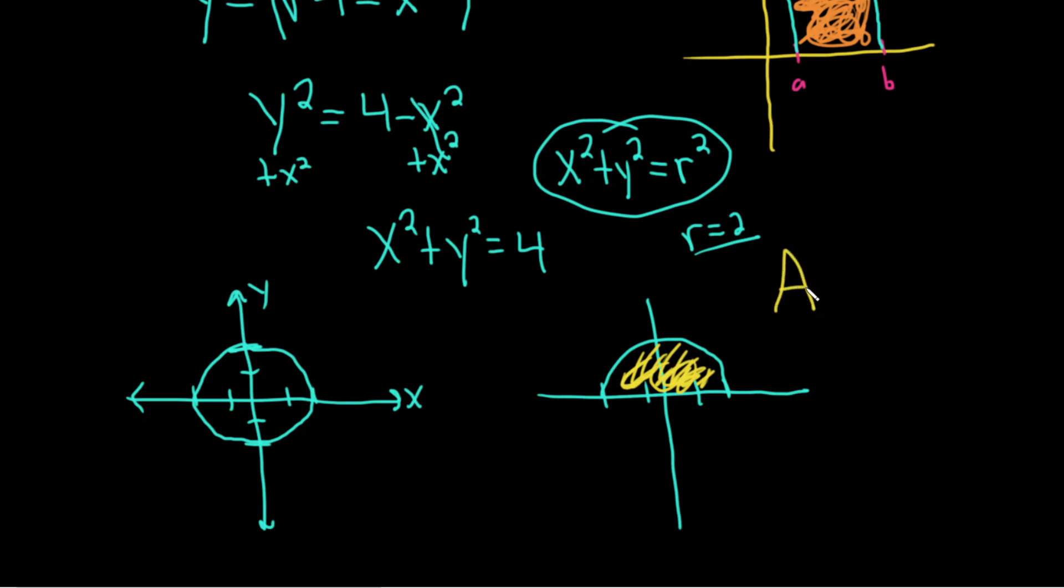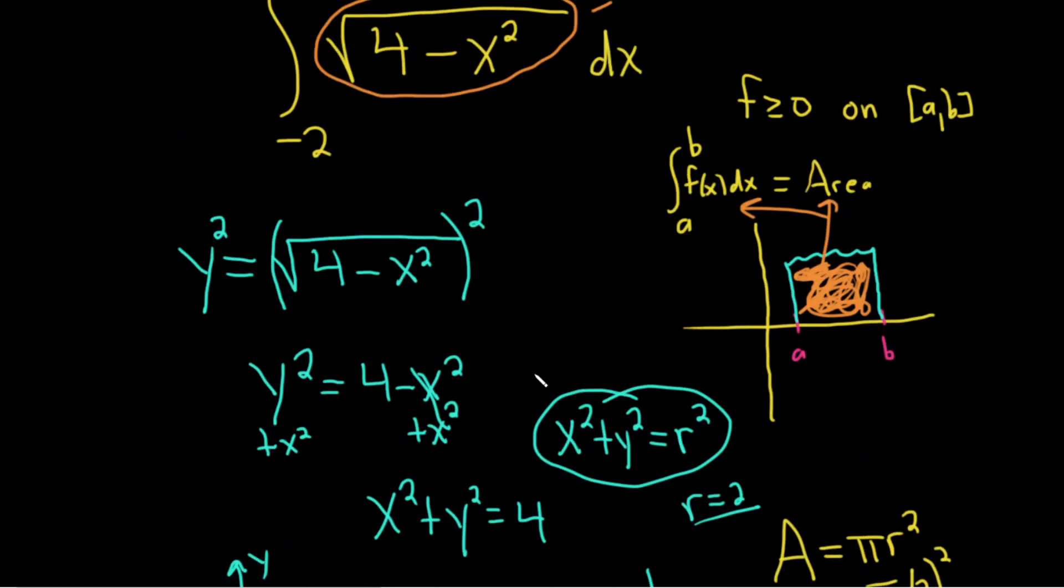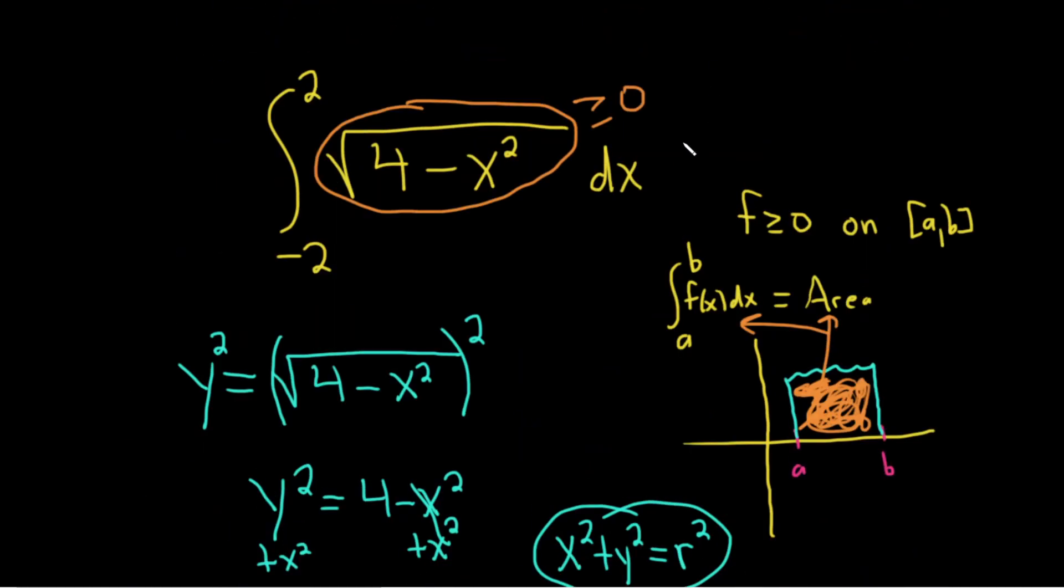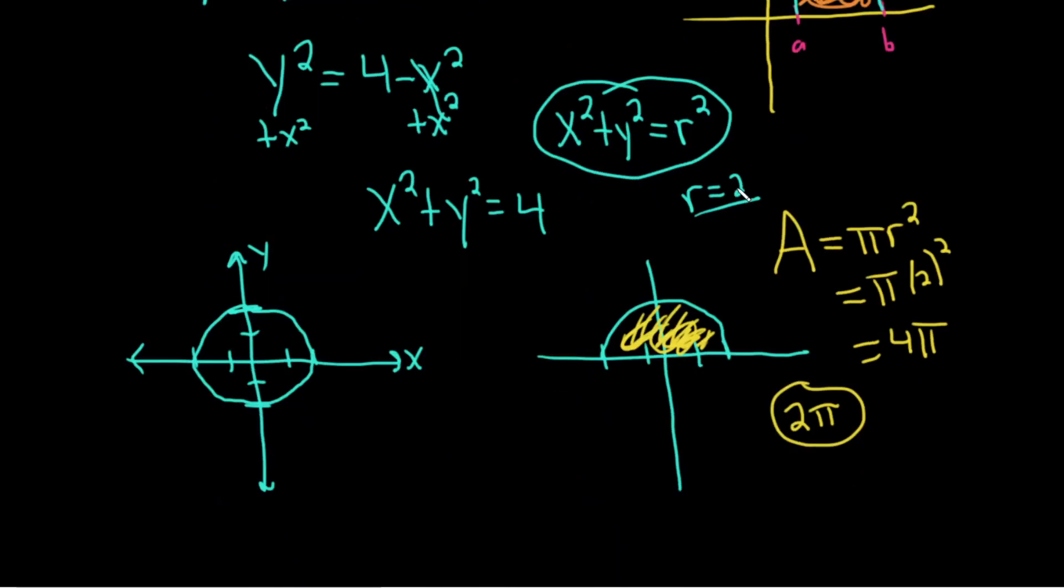So the area of a circle is pi r squared. So the area of the full circle, well, the radius here is two. So it would be pi times two squared. So it would be four pi. So that would be the area of the entire circle. So since we only want half the circle, it would be two pi. So the answer to this problem is two pi. So this definite integral is equal to half the area of a circle of radius two centered at the origin.